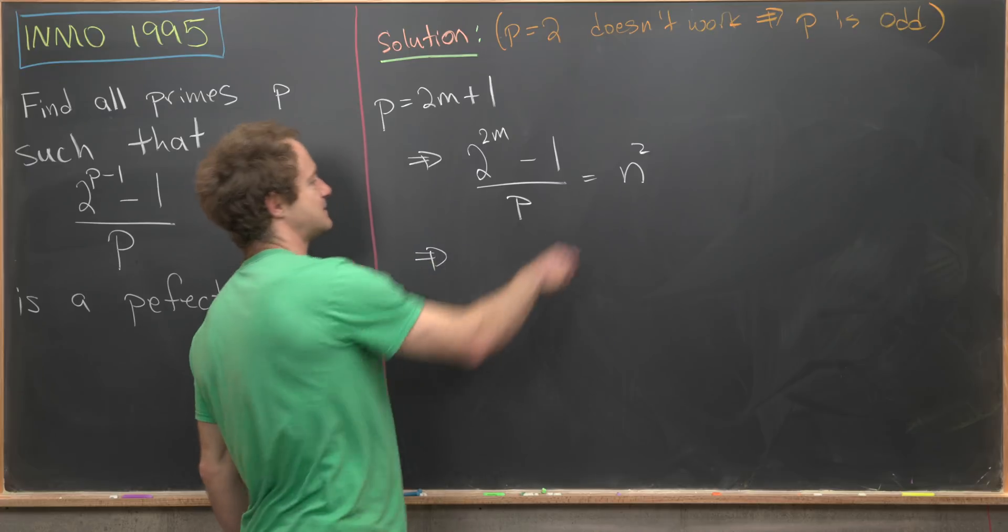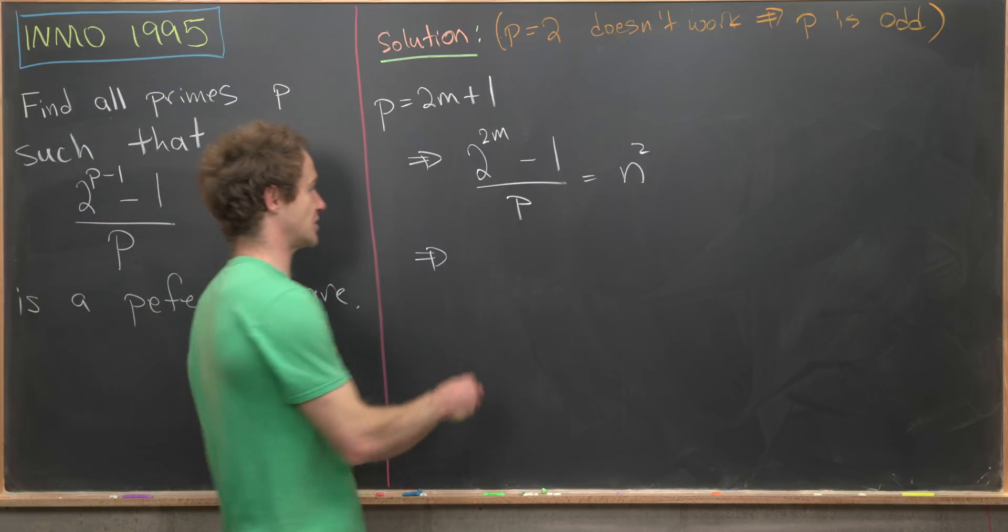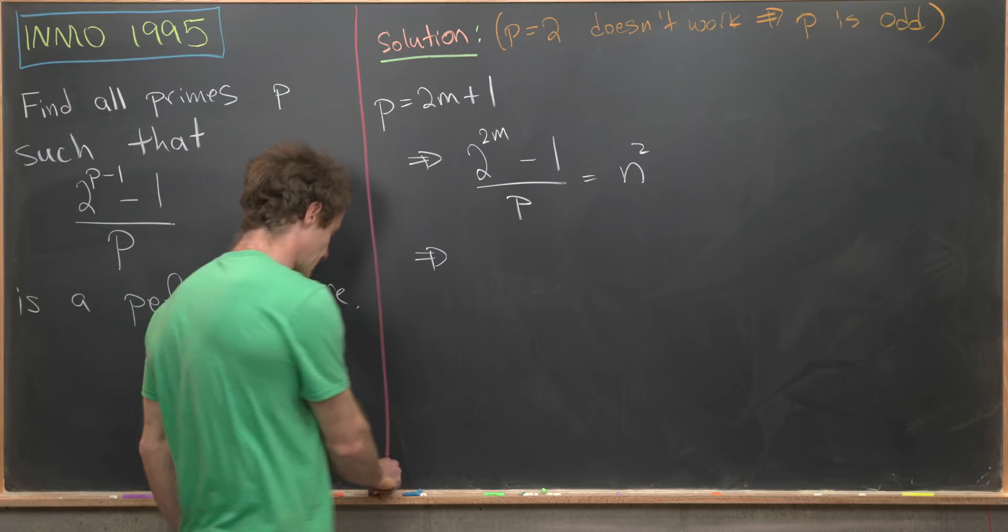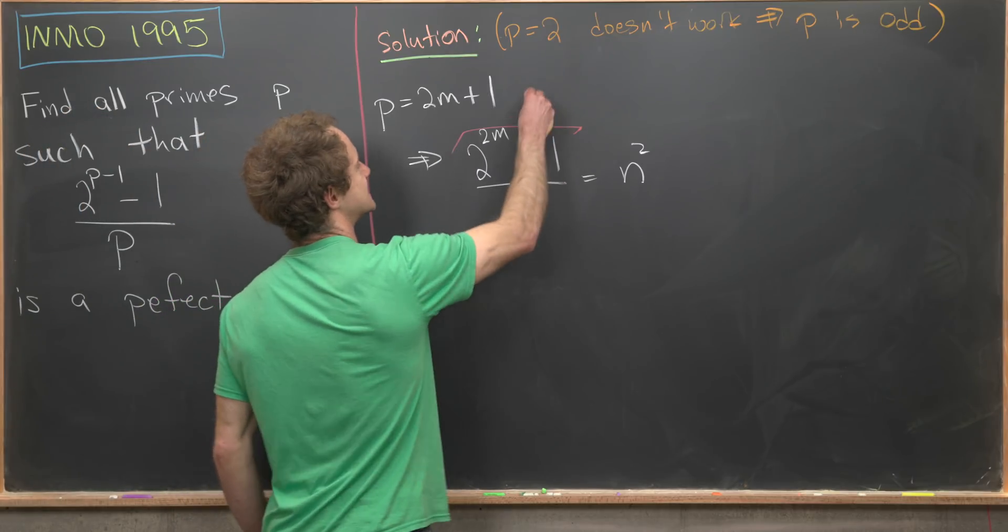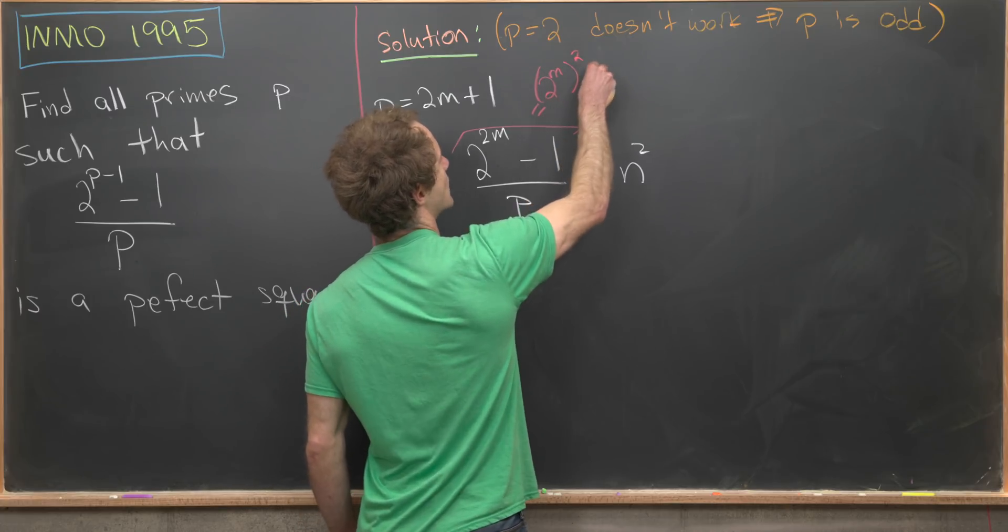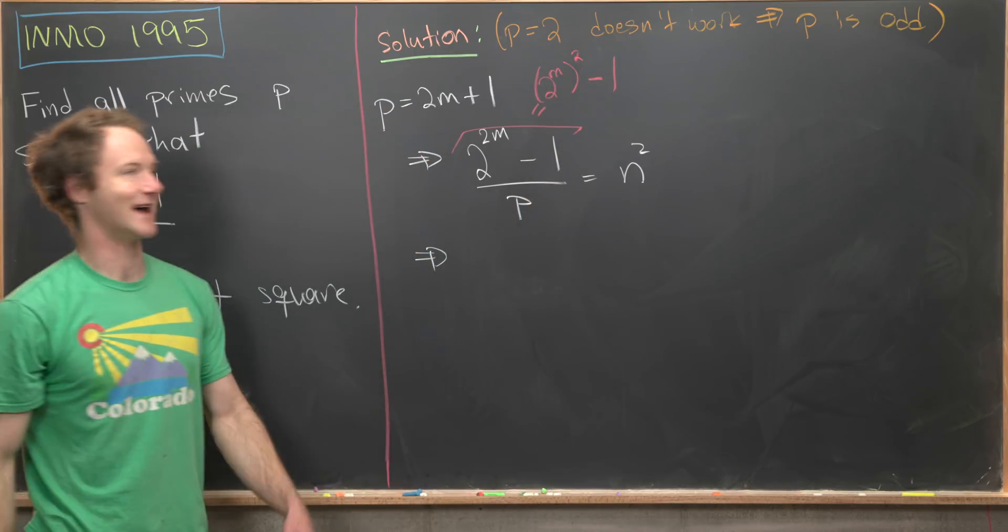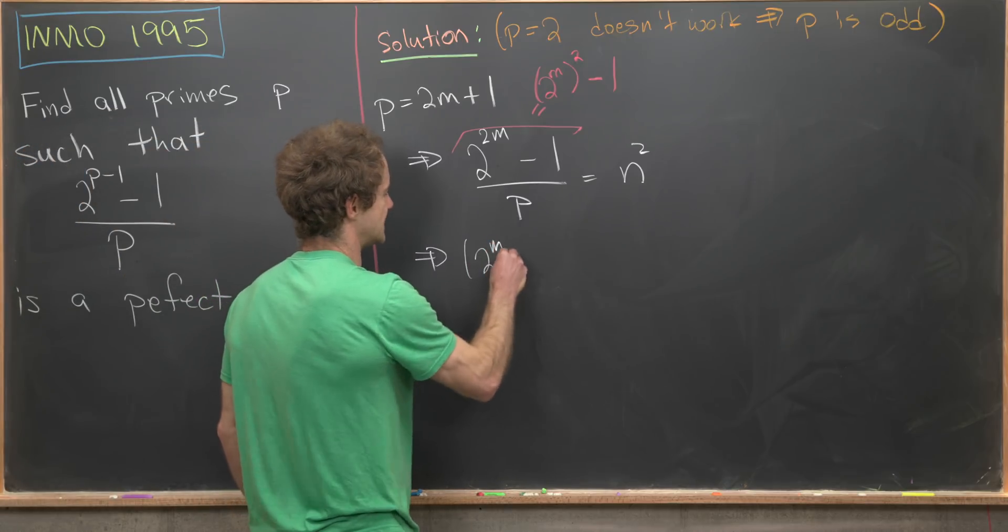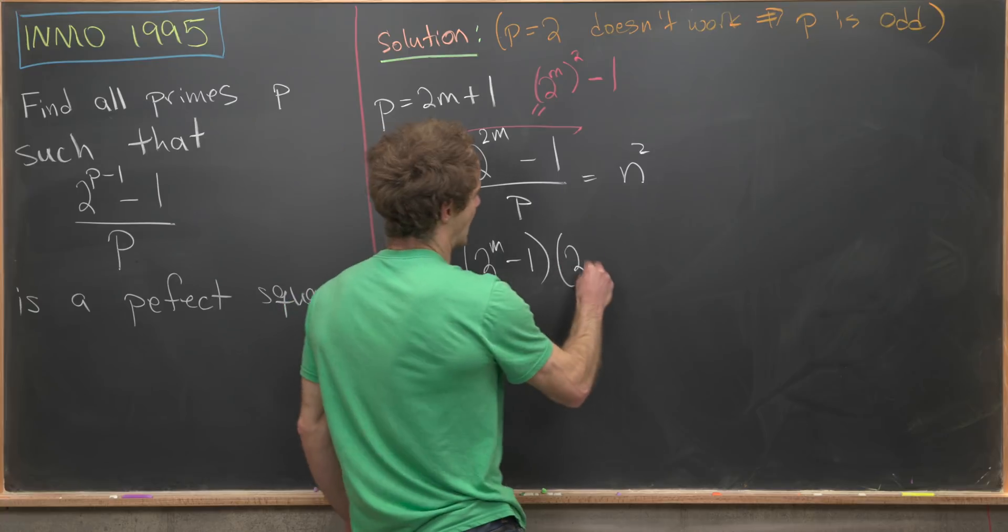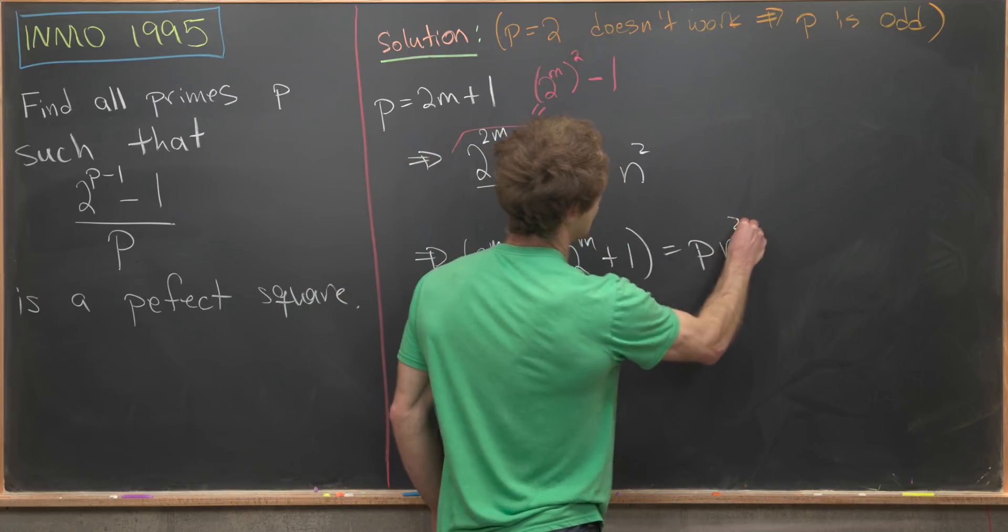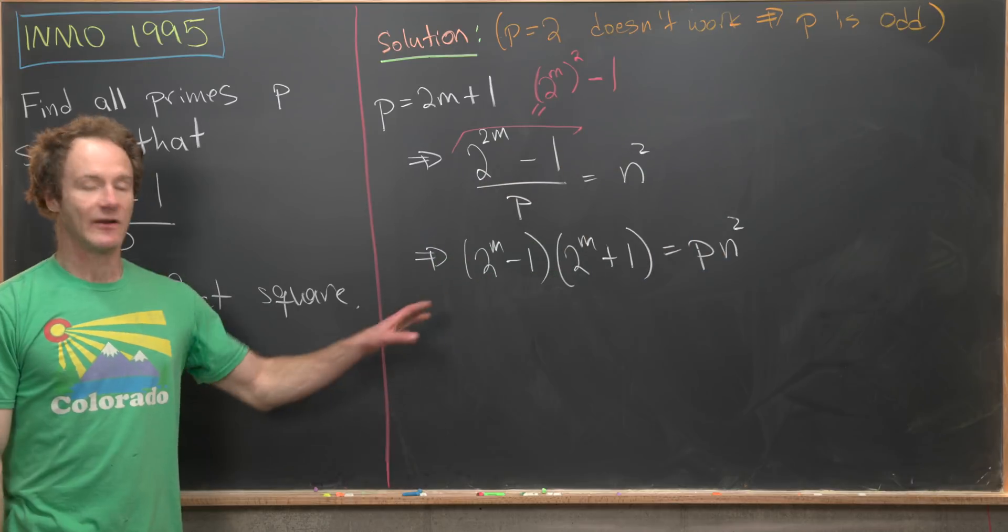So next up, let's go ahead and multiply this p to the other side of the equation, and then factor this numerator using a difference of squares. Notice that we can very easily see that this is equal to (2^m)^2 - 1, like that. So we've got a nice factorization. So here we have (2^m - 1)(2^m + 1) = p·n^2.